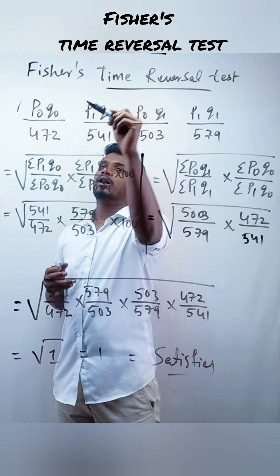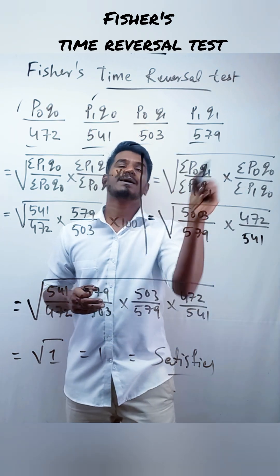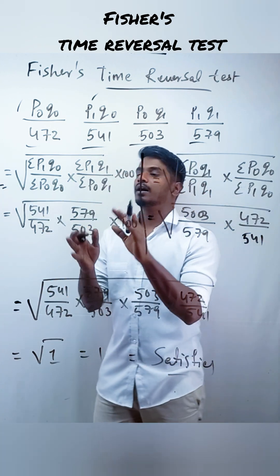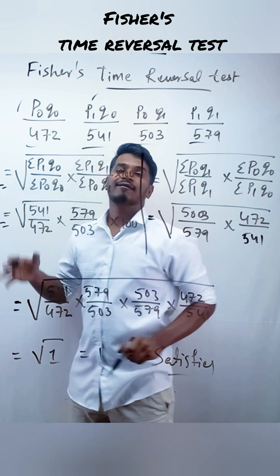Let us assume we got these values after multiplying everything. Next, write the Fisher's formula and put the values.